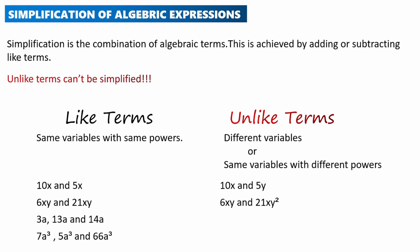Another example of unlike terms is 3a, 13b, and 14c — a, b, and c are different variables. The final example is 7a³, 5a², and 66a: each term has the common variable a but different powers — cubed, squared, and just a — so this is also an unlike term.